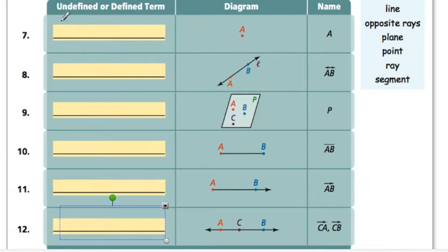So the first one, this letter A right here with the dot, that is definitely going to be a point. That's a point. The second one, when you have an end point on both ends, that is a line.